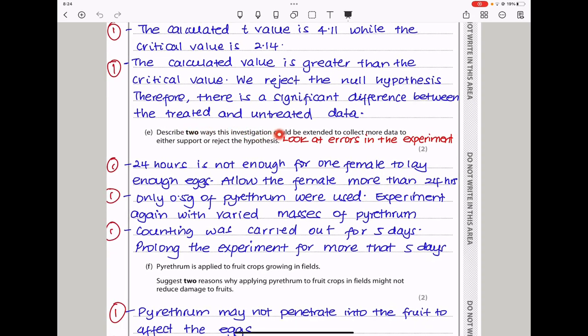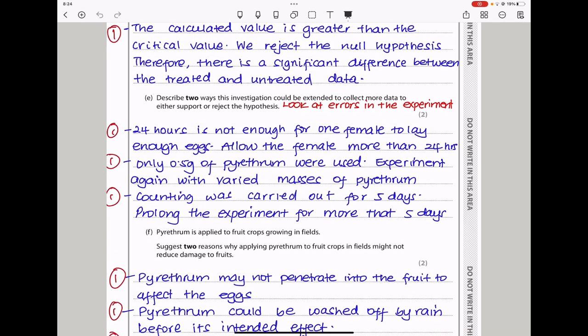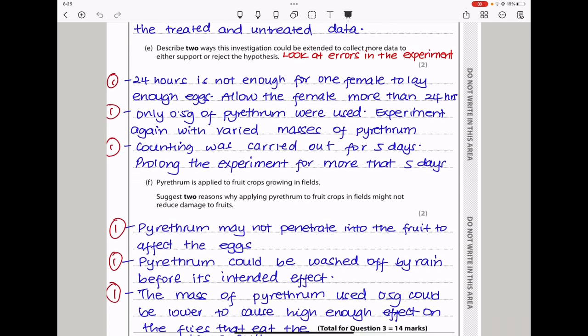This described two ways this investigation could be extended to collect more data to either support or reject the hypothesis. This is similar to what I wrote in the beginning of this question. The experiment could have been carried out for longer. The female could have been allowed more than 24 hours to lay eggs to allow more eggs to be collected. They used a mass of 0.5 grams of pyrethrum, meaning the experiment was not varied enough. They could have used more masses of pyrethrum. The counting was carried out for just five days. They could have prolonged the experiment for more than five days.